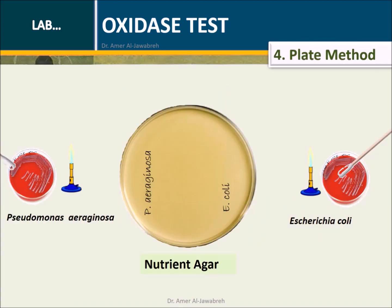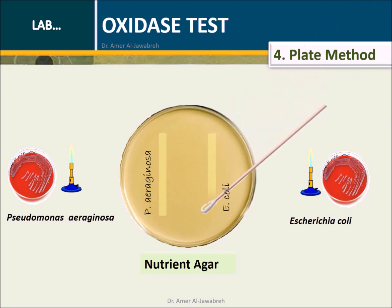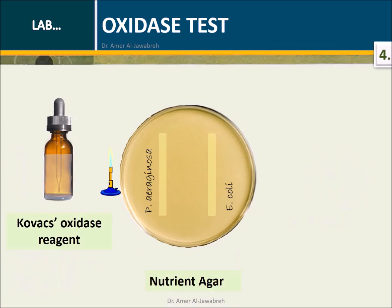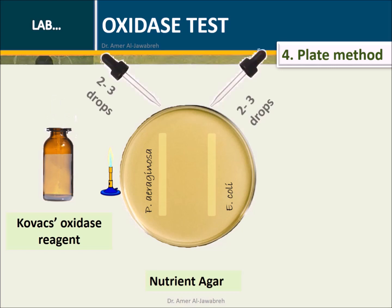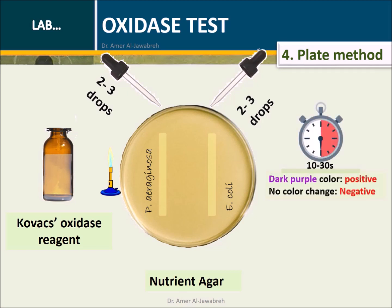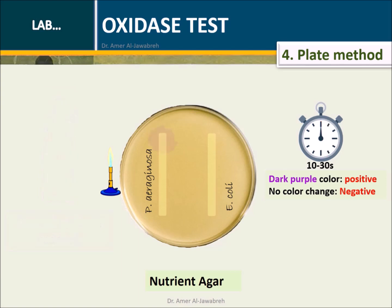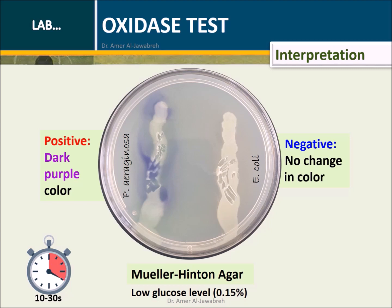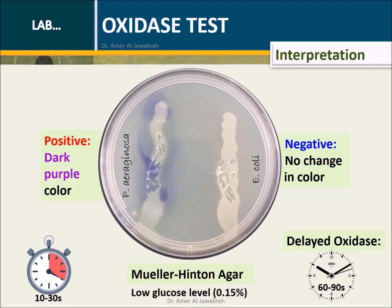Method 4 — Plate method: From a blood agar plate, take a swab of Pseudomonas aeruginosa and draw a line on one side of the nutrient agar plate. With another swab, draw an E. coli line on the other side. Incubate at 35 to 37 degrees centigrade for 24 hours. Add 2 to 3 drops of fresh Kovacs reagent directly to the suspect colonies on the agar plate. Do not flood the plate with reagent. Observe for color change within 10 to 30 seconds. Dark purple within 30 seconds indicates positive results; no color change indicates negative results. Note: delayed oxidase positive on plate method can be within 60 to 90 seconds.